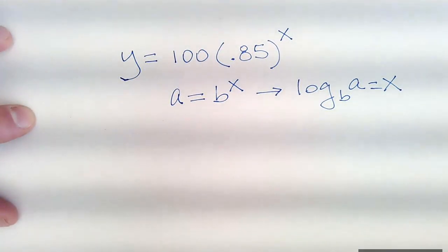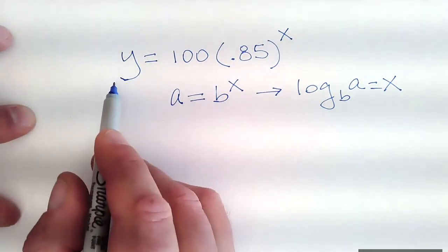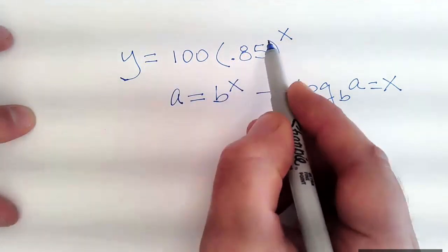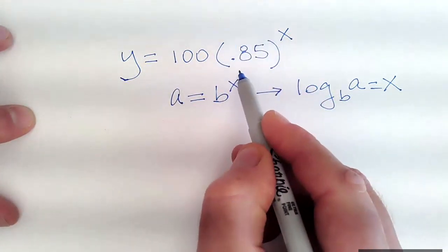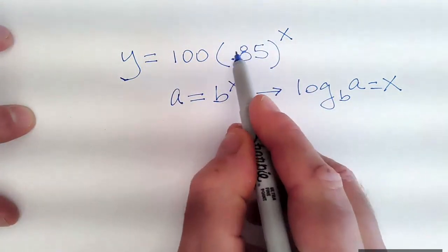Two things you can use, the TI-83 or 84 and Desmos. I'll show both. So first off, let's say I want to find out when this is a decaying problem. Notice that this is smaller than one, so it's going to be decaying.